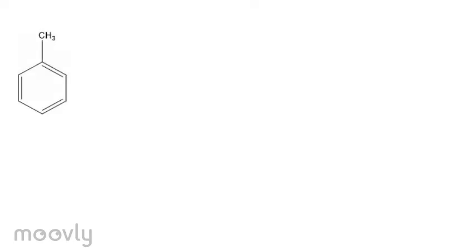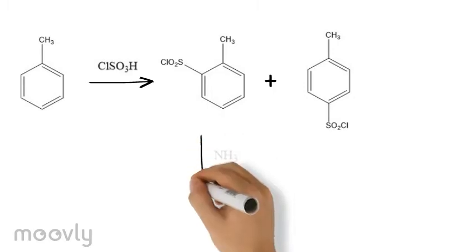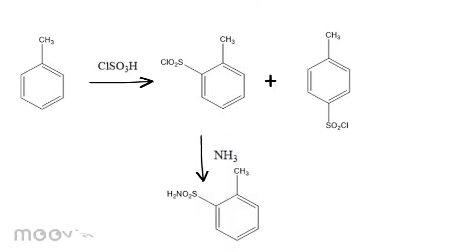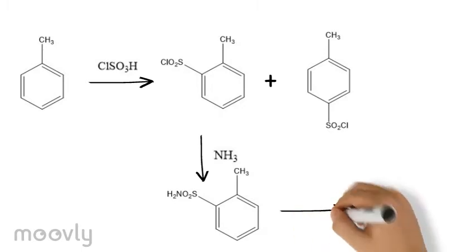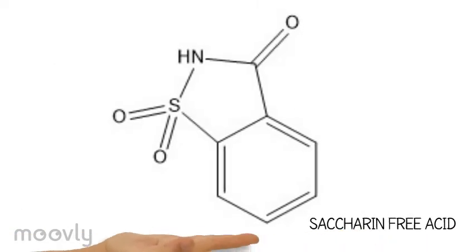In simpler terms, the sulfonation by chlorosulfonic acid gives the ortho and para substituted sulfonyl chlorides. The ortho isomer is separated and converted to sulfonamide with ammonia. Oxidation of the methyl substituent gives the carboxylic acid, which undergoes a ring-closing reaction, also known as cyclization, to give saccharin free acid.